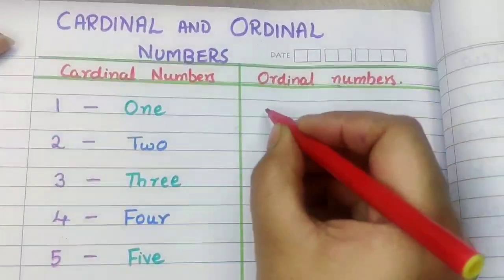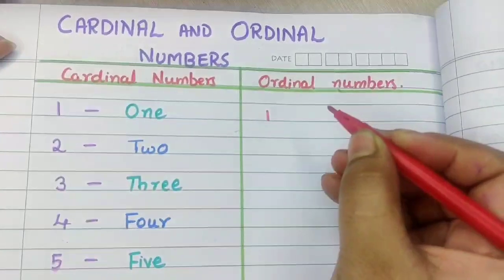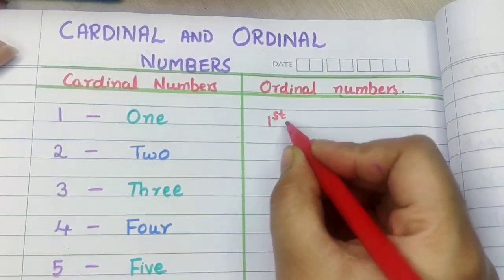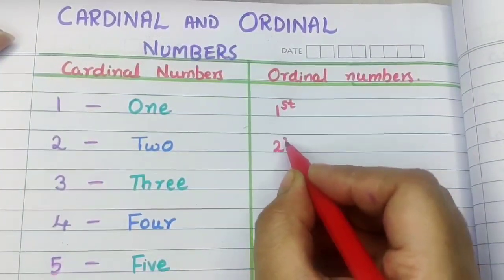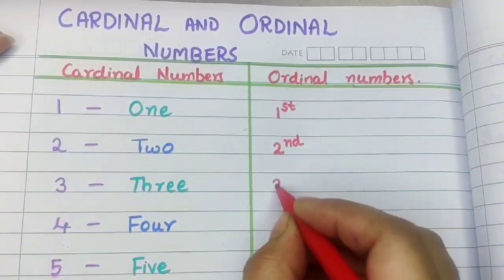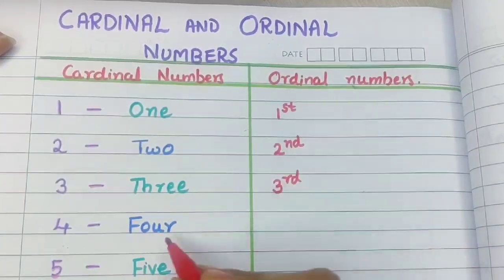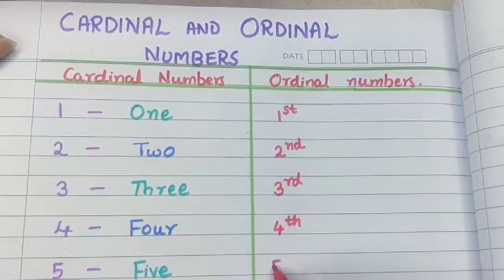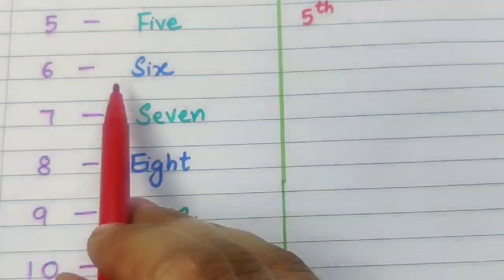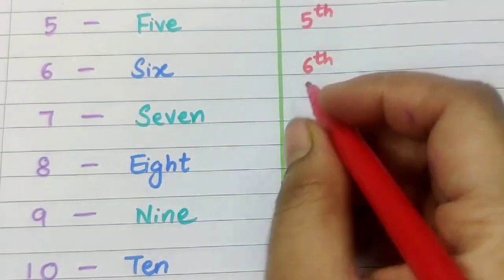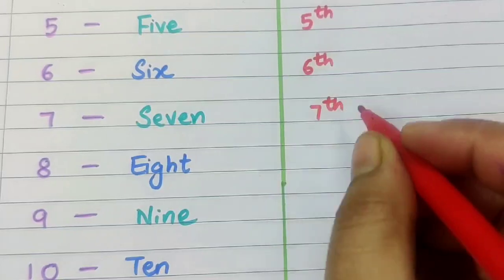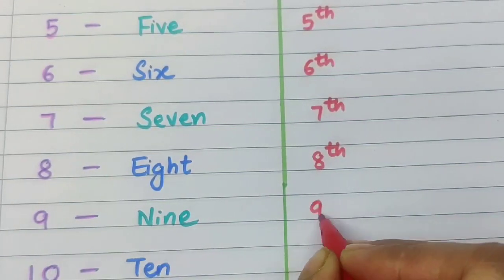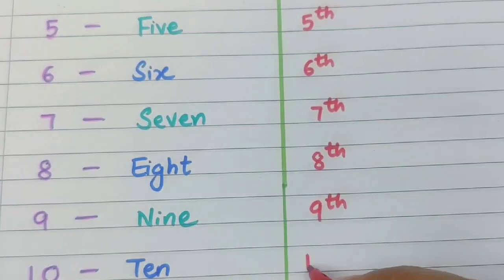Now 1 is written as first — 1st. 2 is represented as second — 2nd. 3 is represented as third — 3rd. 4 is fourth — 4th. 5 is written as fifth — 5th. 6 is written as sixth — 6th. 7 is written as seventh — 7th. 8 is written as eighth — 8th. 9 is written as ninth — 9th. 10 is written as tenth — 10th.